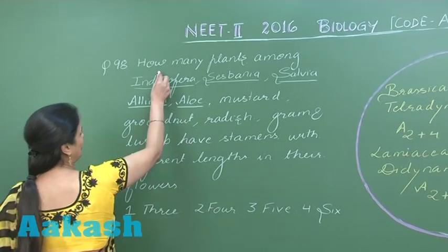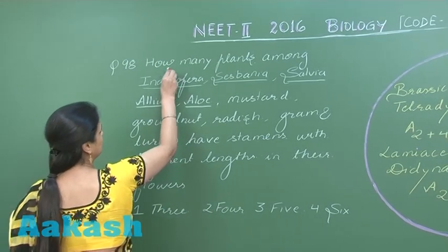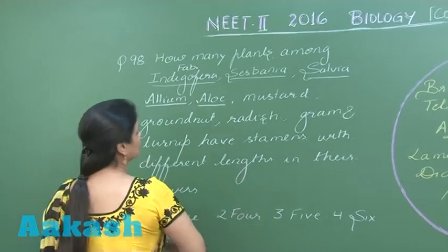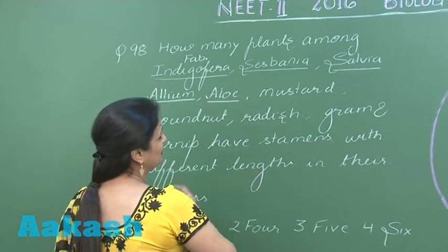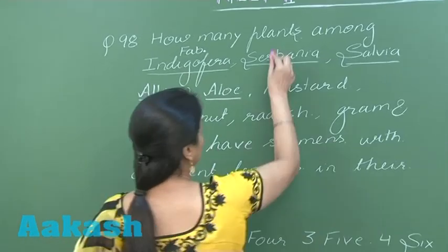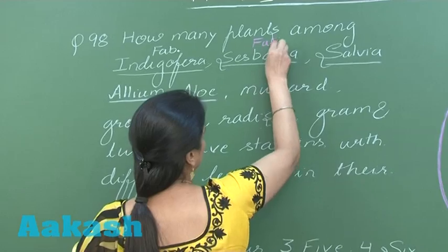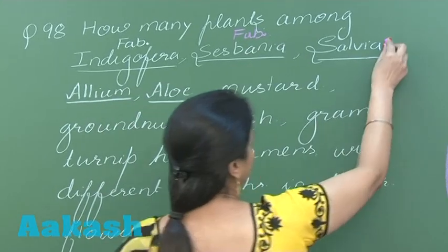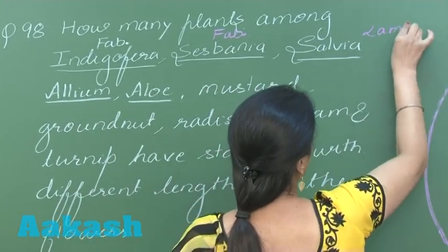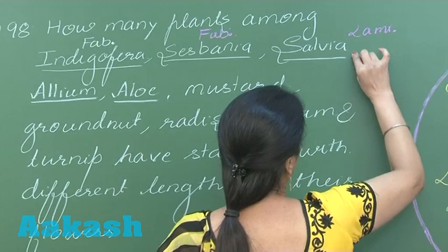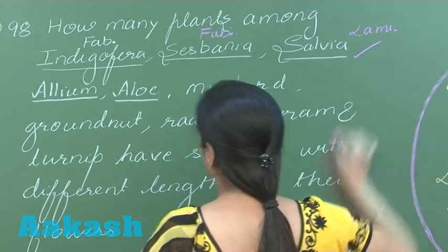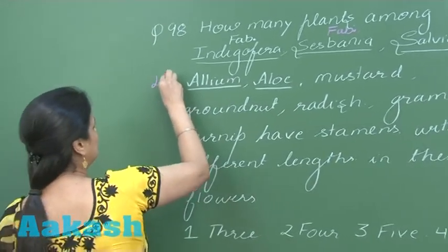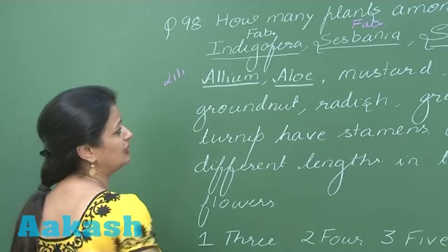Indigofera belongs to the Fabaceae family. Sesbania is again Fabaceae. Salvia belongs to the Lamiaceae family — so it has different lengths of stamens. Aelium and Aloe belong to the Liliaceae family.